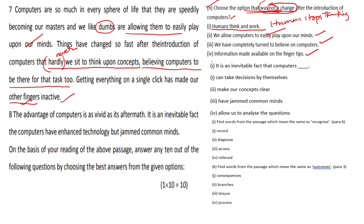Question I: 'It is an inevitable fact that computers...' The passage states: 'The advantage of computers is as vivid as its aftermath. It is an inevitable fact that computers have enhanced technology but jammed common minds.' So the inevitable fact is that computers have jammed common minds — this is the direct answer.